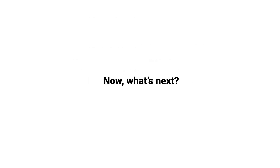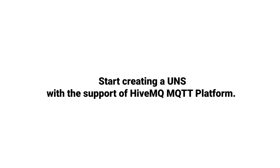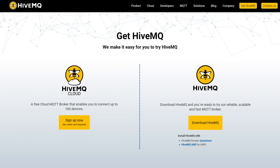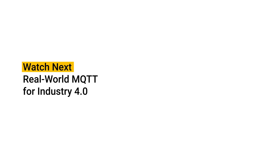Over this series, we defined the Unified Namespace, explored common mistakes and misconceptions, and laid out the best practices for structuring it. Now that you understand the Unified Namespace's foundational concepts, you can start incorporating it into your digital transformation strategy with the support of the HiveMQ platform. HiveMQ is a fully Sparkplug-compatible MQTT broker available in both on-premise and cloud-managed versions. Try it out today and start creating a Unified Namespace. Thank you for watching and see you in the next video.